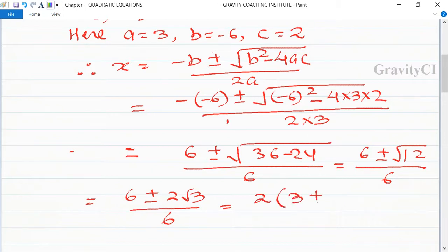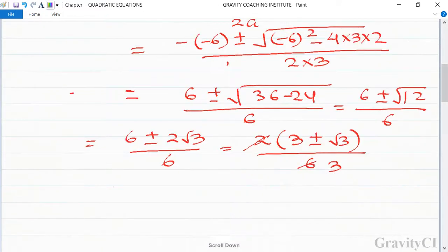Now we take 2 as a common factor, so 3 plus minus root 3 upon 3. This is equal to 3 plus root 3 upon 3 comma 3 minus root 3 upon 3.